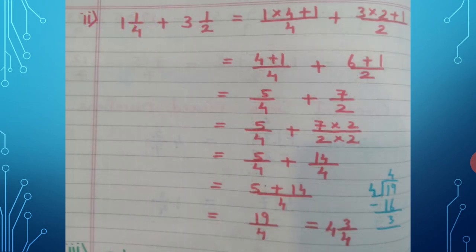Question 2: 1 and 1 upon 4 plus 3 and 1 upon 2. Convert to improper fractions: 1 × 4 + 1 upon 4, plus 3 × 2 + 1 upon 2. Solve the multiplication first.